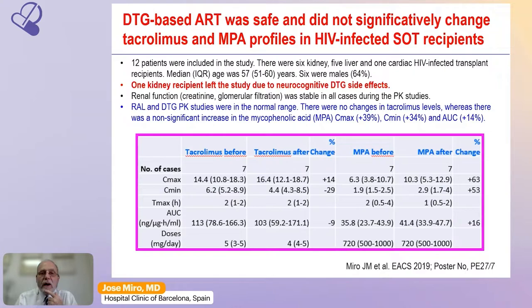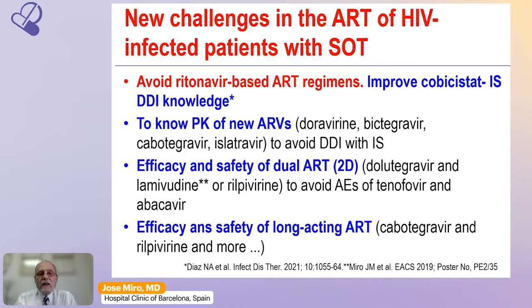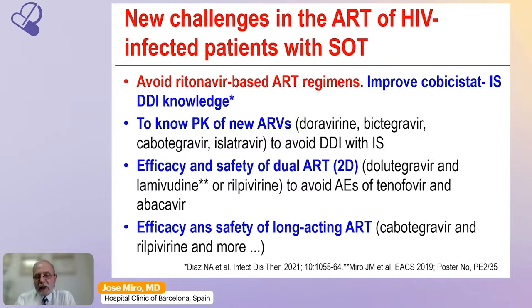A preliminary PK study using dolutegravir-based ART confirmed it was safe — dolutegravir did not induce significant changes in tacrolimus or mycophenolate profiles in HIV-infected solid organ transplant recipients. New challenges in antiretroviral therapy include patients with MDR or XDR HIV who need protease inhibitor regimens, where we should try to avoid ritonavir-based ART and consider replacing ritonavir with cobicistat, though experience is preliminary. We also need to know the PK profiles of new antiretrovirals, the efficacy and safety of dual ART such as dolutegravir/lamivudine or rilpivirine, and long-acting ART such as cabotegravir and rilpivirine.